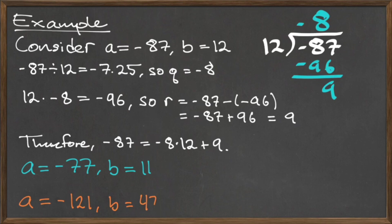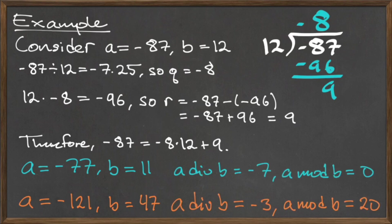To get some more practice with this strategy, try computing the long division of negative 77 by 11, and again with negative 121 and 47. For a equals negative 77 and b equals 11, the quotient a div b is equal to negative 7, and the remainder a mod b is equal to 0. For a equals negative 121 and b equals 47, the quotient a div b is equal to negative 3, and the remainder a mod b is equal to 20.